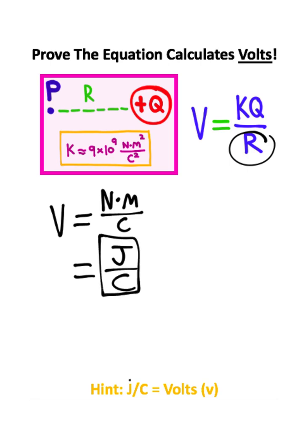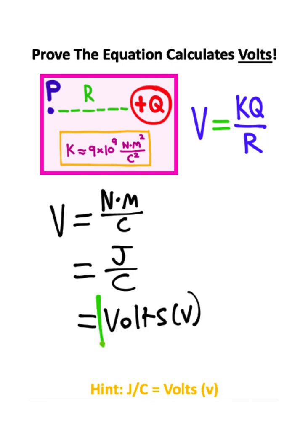Notice how we have joules per coulomb, and joules per coulomb is equal to volts. We just proved that this equation calculates volts.